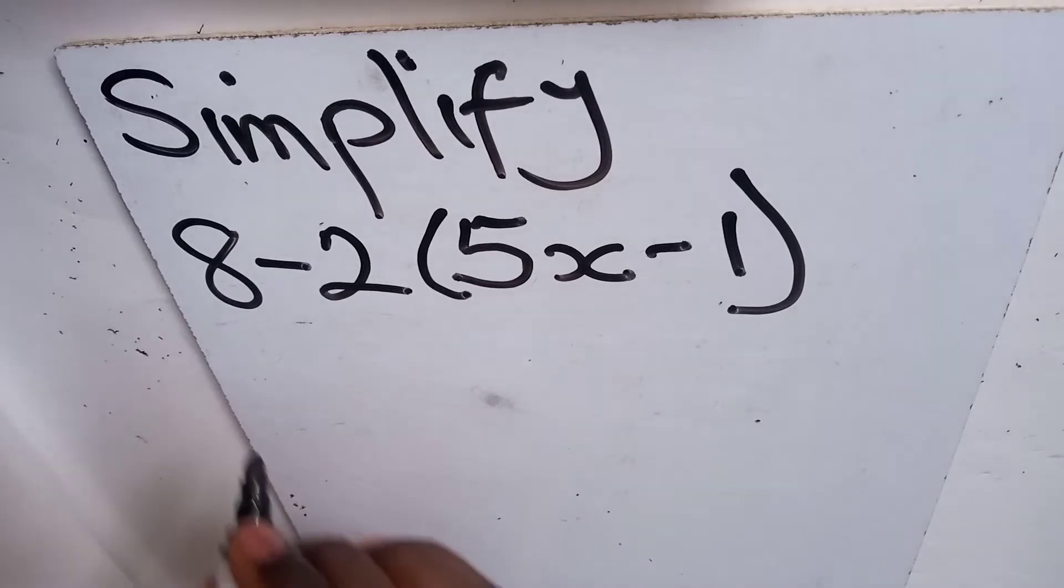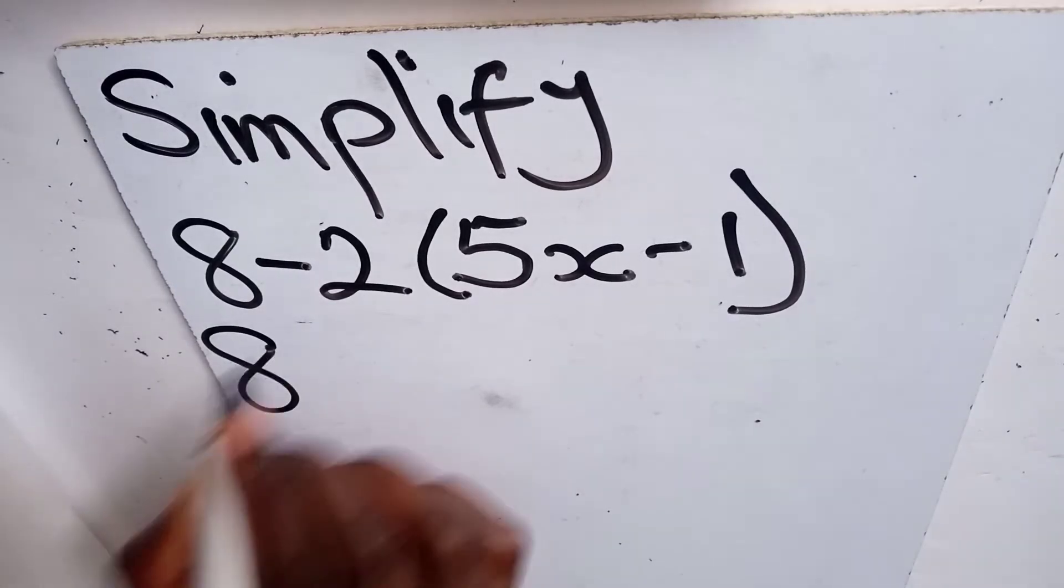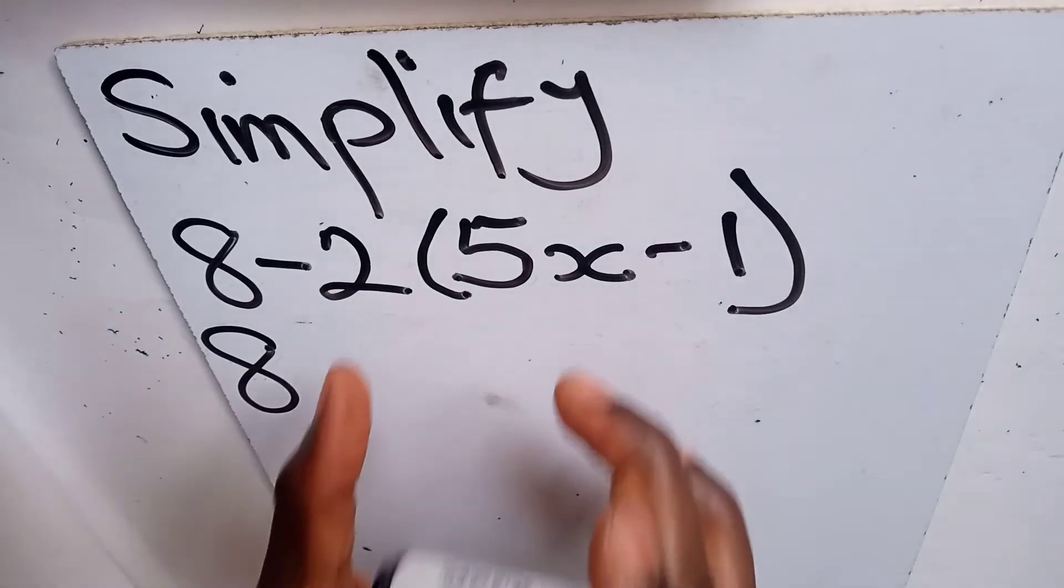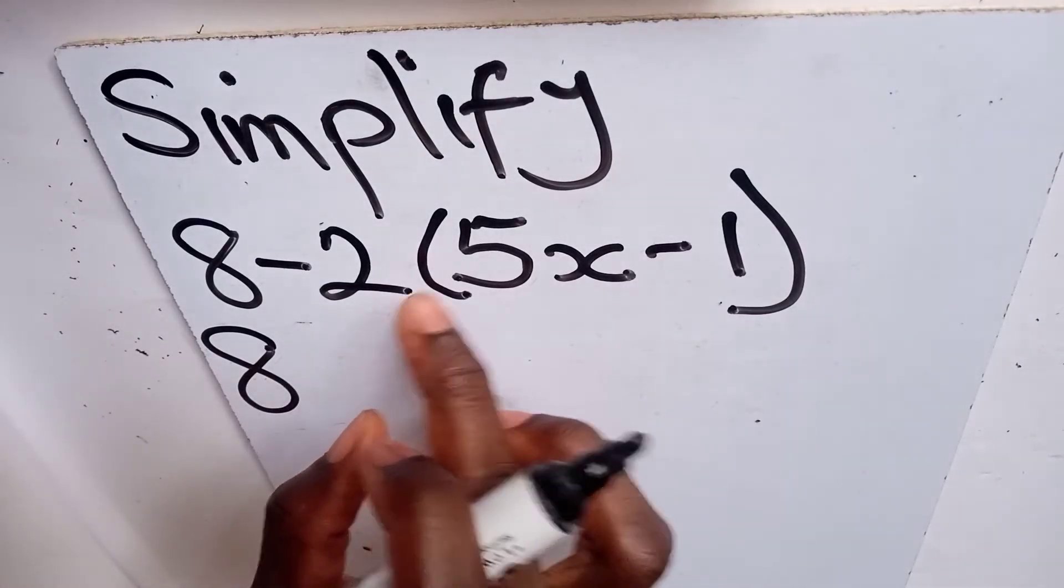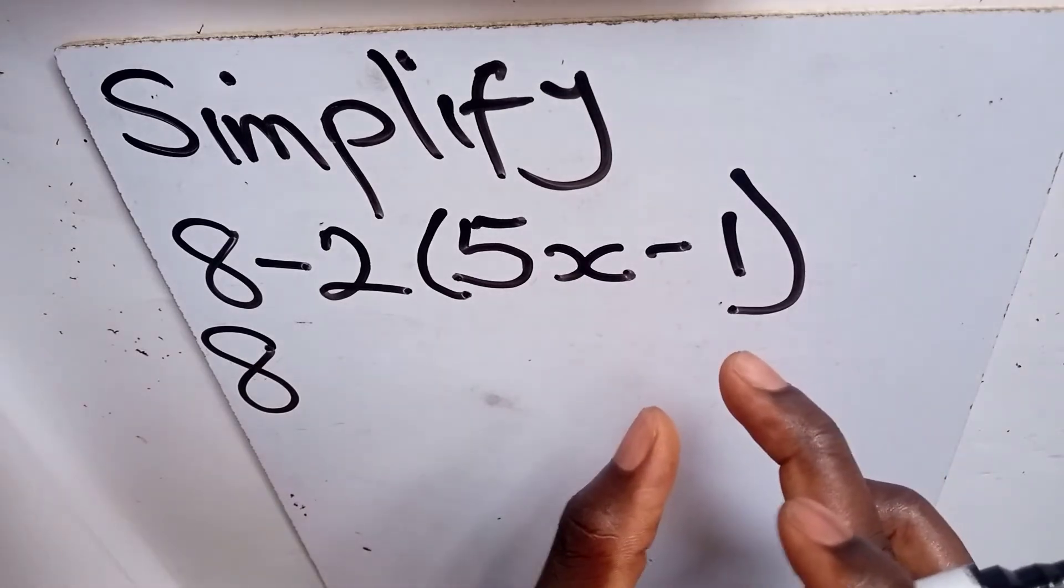So let's expand the brackets. We have our 8 over here already. Now by expansion, we mean you are multiplying the number outside the bracket by each term in the bracket.